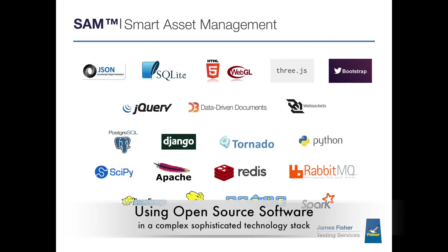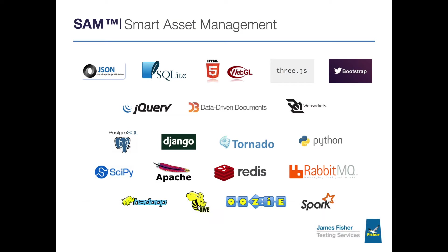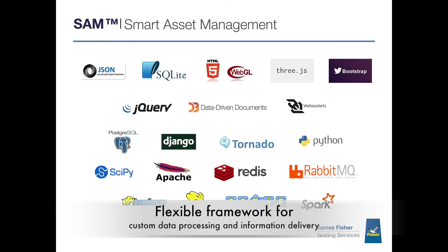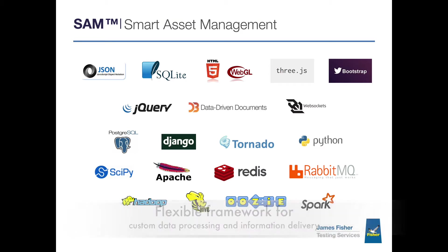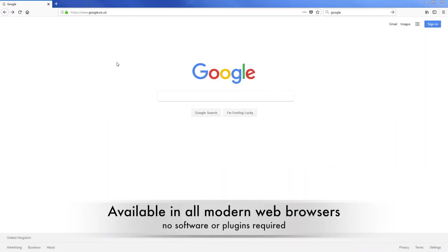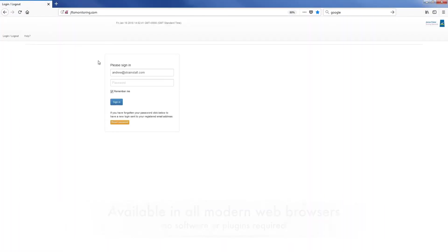Using open source software in a complex and sophisticated technology stack, JFTS have designed a flexible architecture framework for custom data processing and intuitive information delivery. The Smart Asset Management System, or SAMS, is available in all modern web browsers and can be hosted in the cloud or on local hardware.